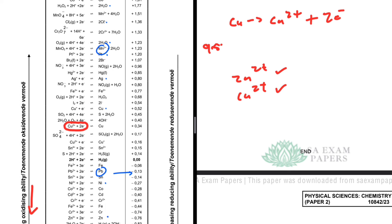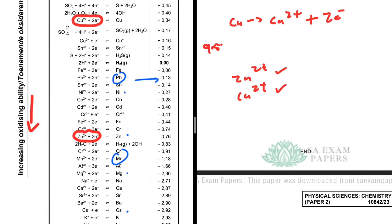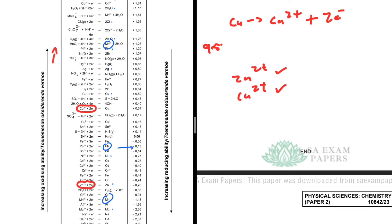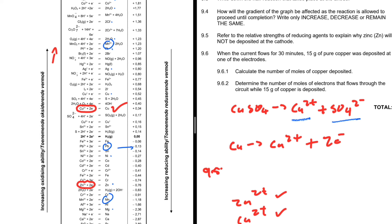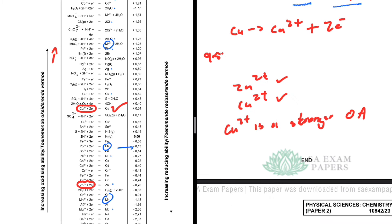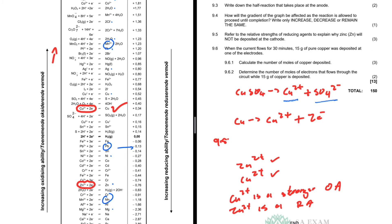From the table, Cu²⁺ is a stronger oxidizing agent compared to Zn²⁺, and Zn²⁺ is a stronger reducing agent. Therefore, zinc will not be deposited at the cathode because Cu²⁺ is the stronger oxidizing agent and will preferentially be reduced and deposited at the cathode instead of Zn²⁺.